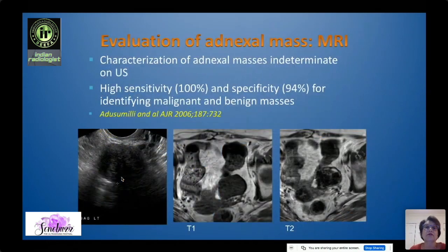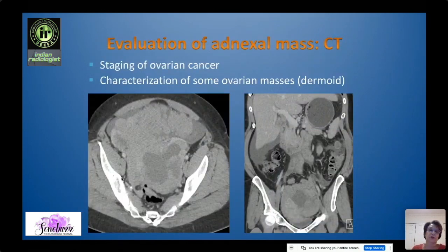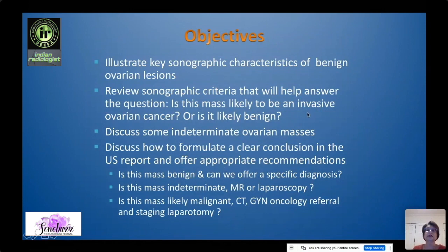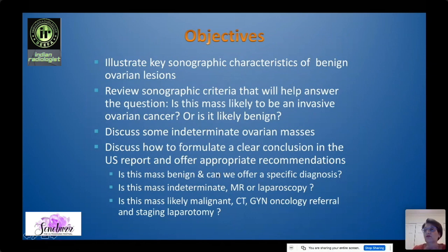We reserve MR for characterization of adnexal masses that are indeterminate on ultrasound. It's a problem-solving modality with high sensitivity as well as specificity for identifying malignant and benign masses. CT doesn't really play a role except perhaps for characterization of dermoids, though many masses are found on CT, and CT is important in cancer staging. We'll illustrate key sonographic characteristics of benign lesions and review criteria to answer whether a mass is likely an aggressive invasive ovarian cancer or likely benign, and discuss indeterminate masses.